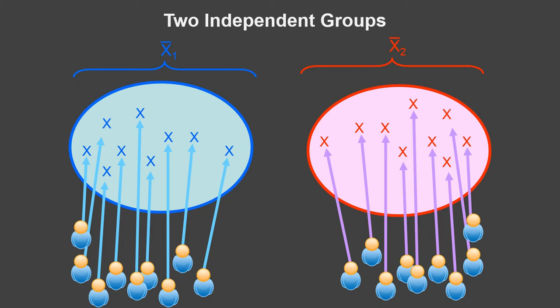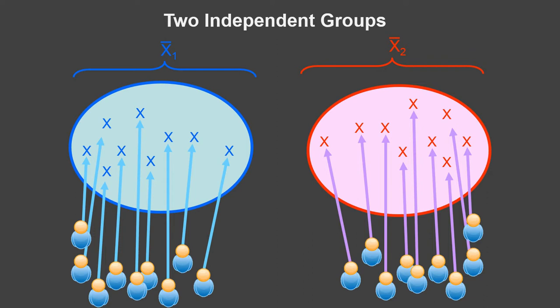So we have this data set up: two independent groups of individuals, and each individual gets a raw score on a very similar or identical outcome measure — a dependent variable, a response variable. It's a numeric variable, and you have two groups of scores and two groups of individuals. Each individual has one score, so the groups of scores correspond perfectly to groups of individuals. Now the groups do not have to be the same size — it's a slightly better situation if they're the same size, but you can deal with different sizes.